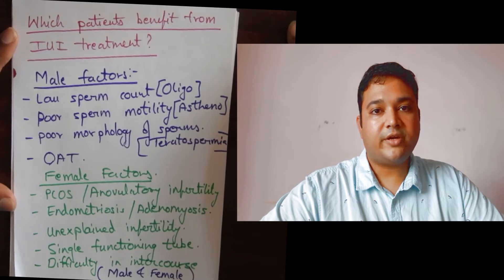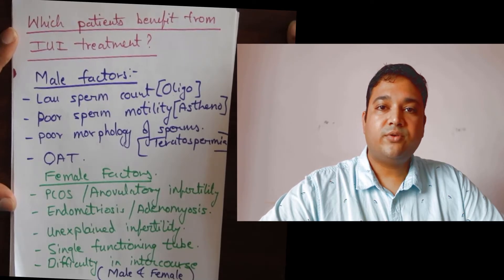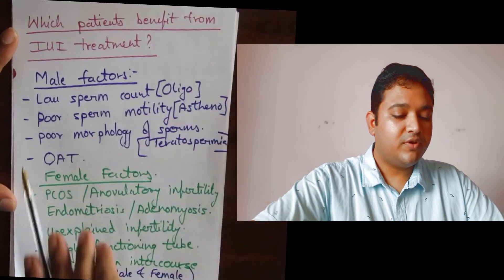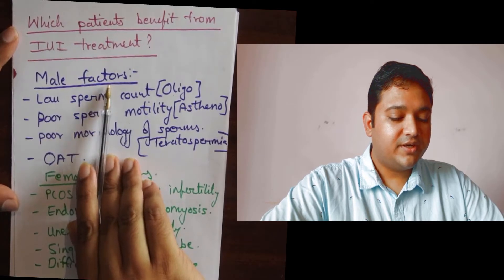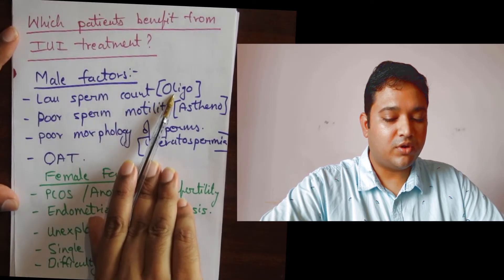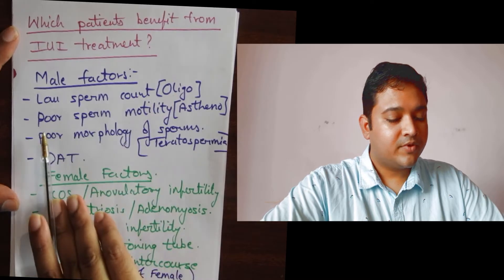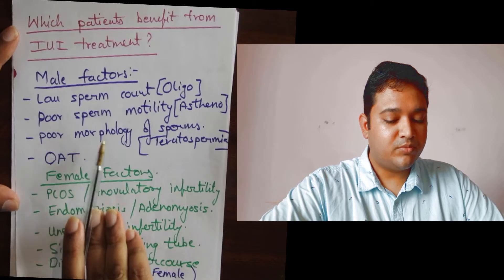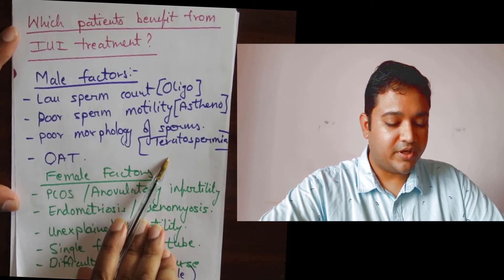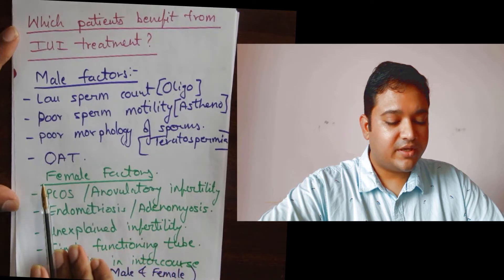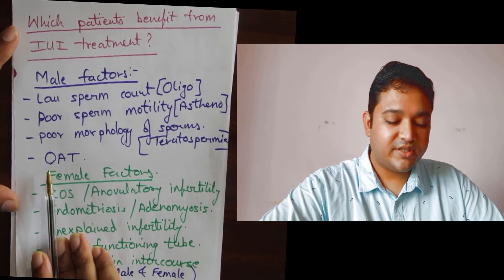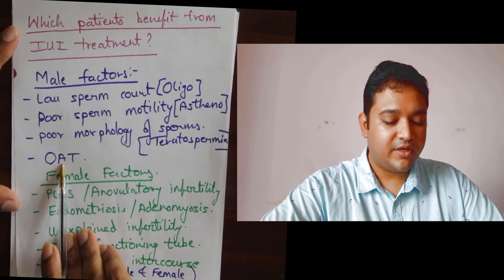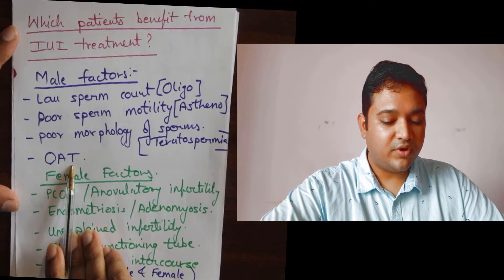Which patients benefit from IUI treatment? IUI treatment is not for everyone. However, IUI can be done in most cases of male factor infertility like low sperm count, also called oligospermia; poor sperm motility, also called asthenospermia; poor sperm morphology, also called teratospermia. All of them can occur in combination in a single patient, where it is called OAT — O standing for oligo, A for asteno, T for terato.